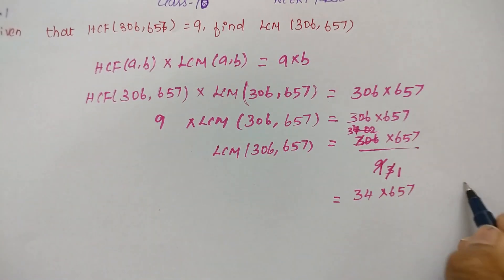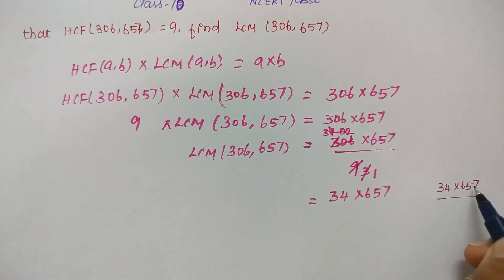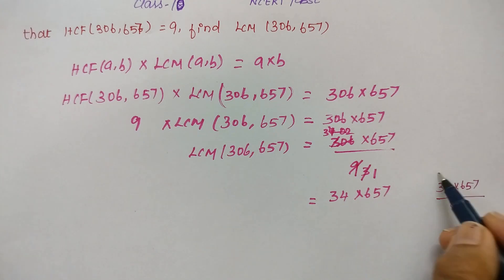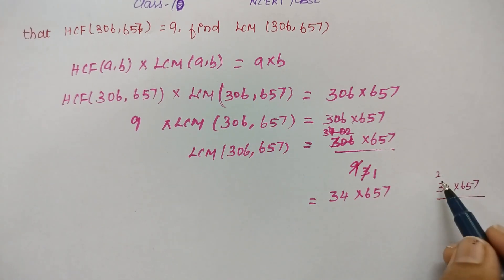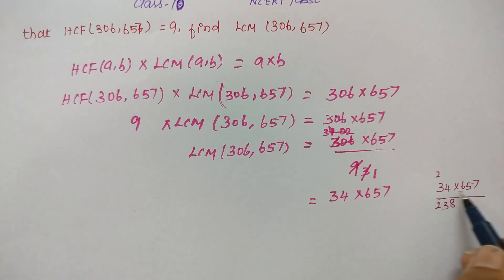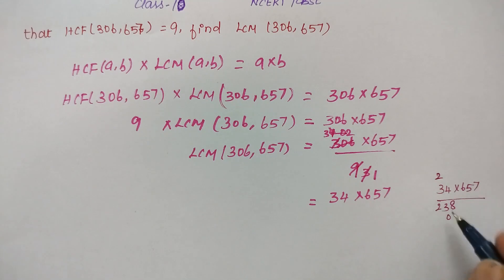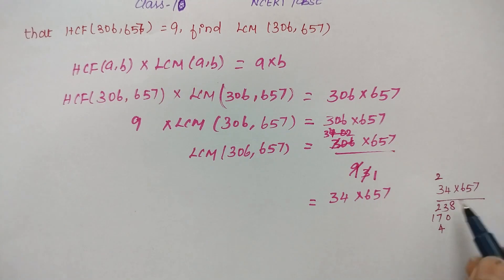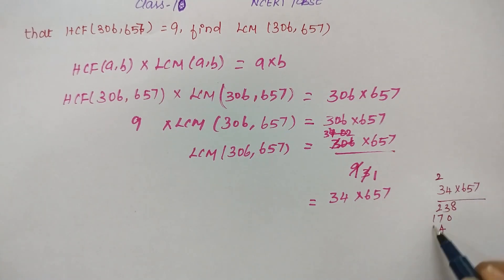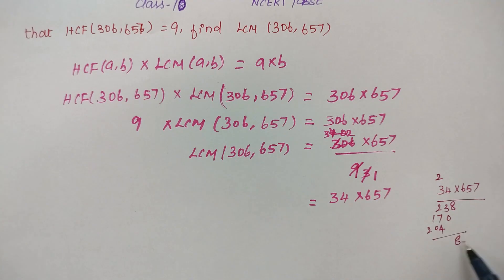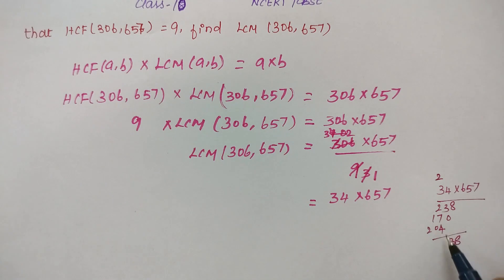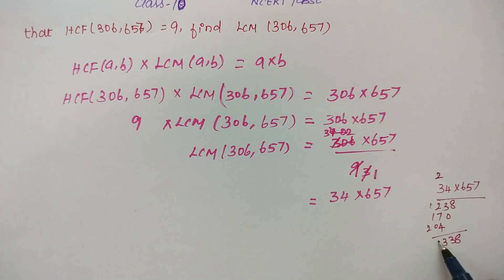Now we multiply 34 into 657. 7 fours are 28, remaining 2. 7 threes are 21, carry 2 gives 23. Next, 5 fours are 20, remaining 2. 5 threes are 15, plus 2 is 17. Then 6 fours are 24, remaining 2. 6 threes are 18, plus 2 is 20. Carrying through: 7 plus 2 is 9, 9 plus 4 is 13, remaining 1, 2.